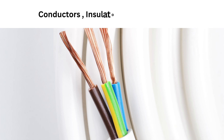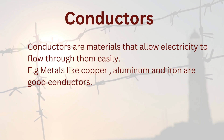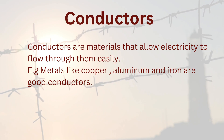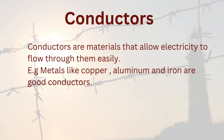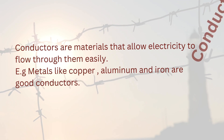Now let's learn about conductors, insulators, and semiconductors. Conductors are materials that allow electricity to flow through them easily. For example, metals like copper, aluminum, and iron are good conductors.